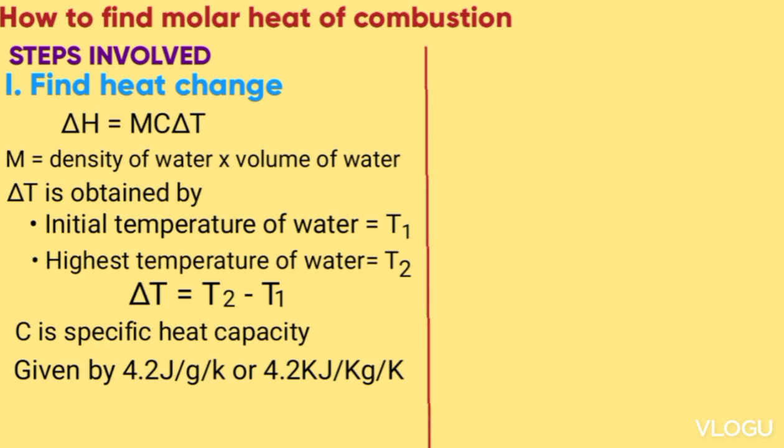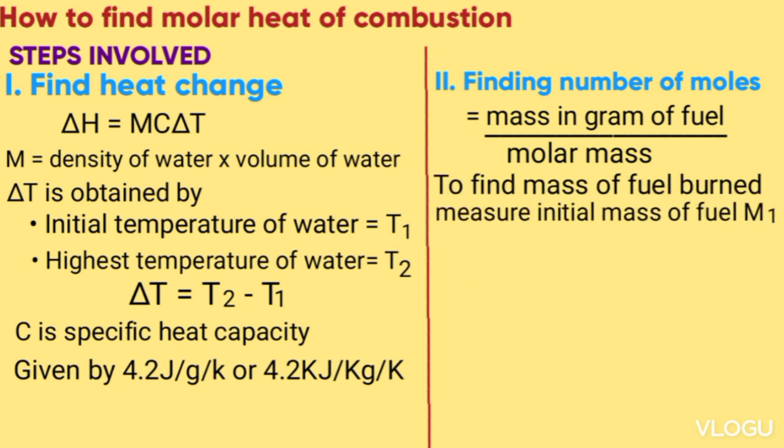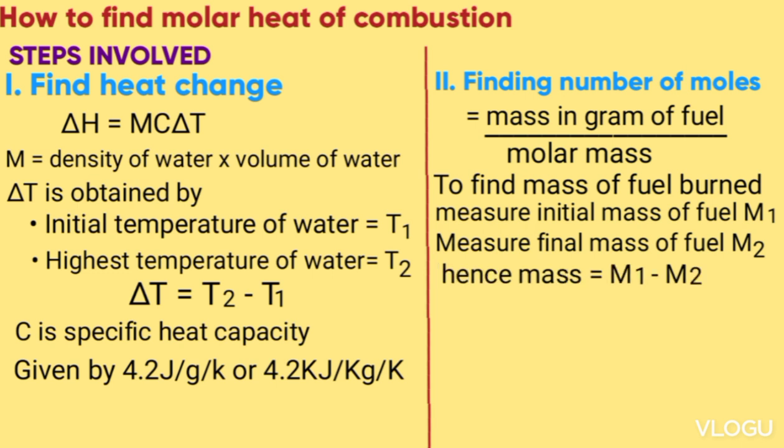Step two is finding the number of moles which is given by mass in grams of fuel burned over molar mass. To find the mass of fuel burned, you measure the initial mass of the fuel M1, then you measure the final mass of fuel M2. So the mass will be M1 minus M2. Note that the final mass is lower than the initial mass. We have a loss in mass when the fuel is burned due to formation of gases which escape to the air.